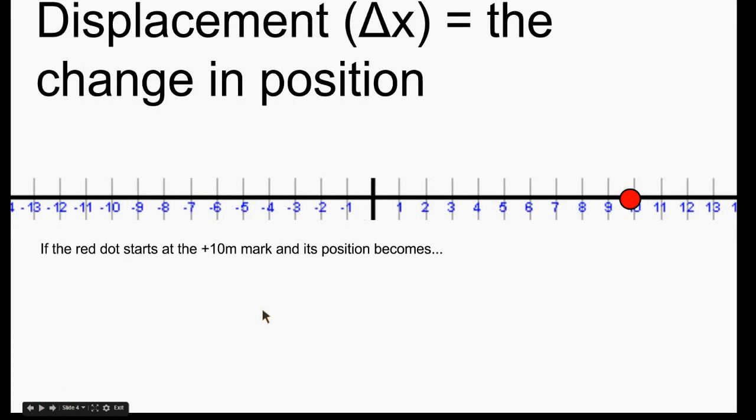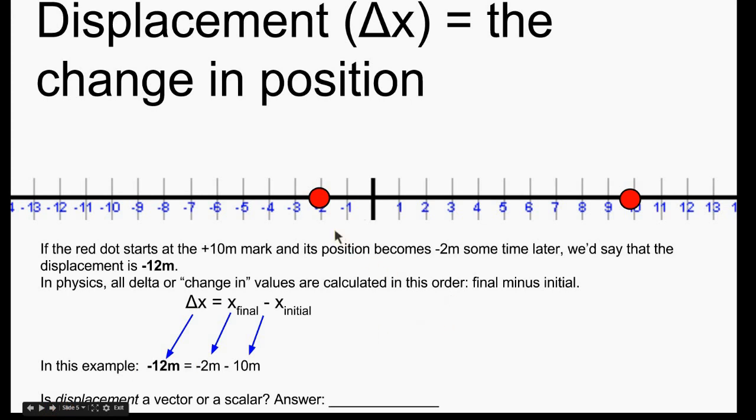Displacement is the change in position. So let's say the red dot starts at the positive 10 meter mark. And then later on, it goes to the negative 2 meter mark sometime later. We'd say that the displacement is negative 12 meters. So I went here from 10 all the way over here to negative 2. So the displacement is negative 12 meters.